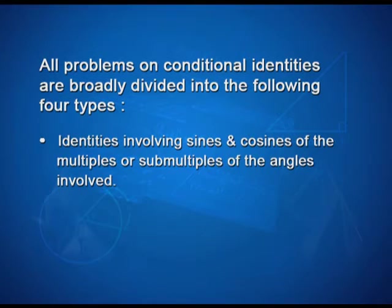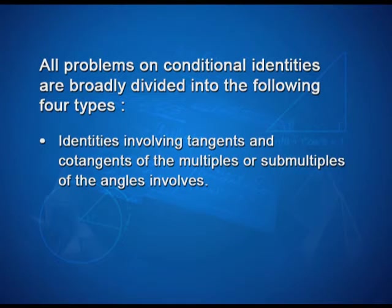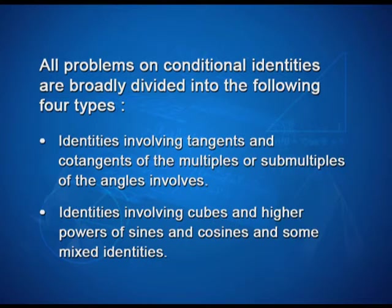All problems on conditional identities are broadly divided into four types. Type 1: identities involving sines and cosines of multiples or sub-multiples of the angles. Type 2: identities involving squares of sines and cosines. Type 3: identities involving tangents and cotangents. Type 4: identities involving cubes, higher powers of sines and cosines, and some mixed identities.